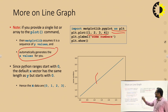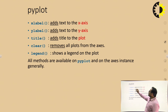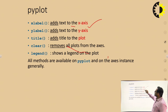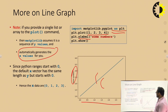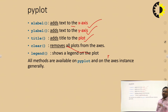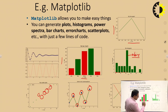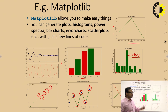One more function is ylabel. What does ylabel do? It gives a label on the y-axis. Similarly, you can write xlabel - plt.xlabel sets the x label. Functions available include: xlabel to set text on the x-axis, ylabel for the y-axis, title to set the graph title, clear to remove all plots from the axis, and legend to show the legend on the plots. Legend shows which line represents which data - for example with two lines, the legend identifies each one.